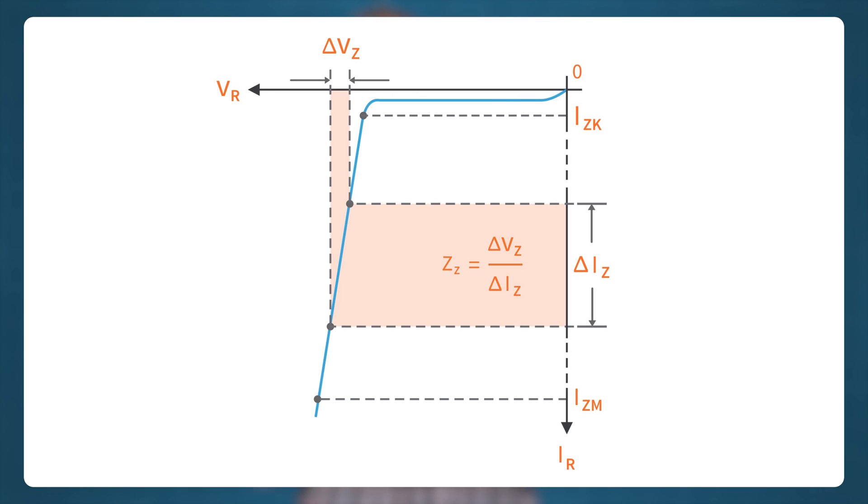However, if the Zener diode is operated near the knee of the curve, the Zener impedance changes drastically. Therefore, it's better to operate the Zener diode beyond the knee of the curve to get a more stable Zener impedance.